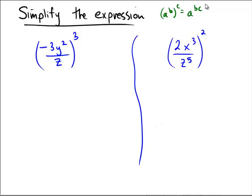Using these rules and the distribution through the multiplication and division, let's start on the left. We have negative 3 to the power of 3, y squared to the power of 3, over z to the power of 3. So that's the distributive property where I'm bringing through all of the powers.